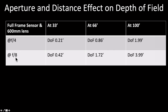Looking at aperture — f4 and f8 on a full-frame sensor camera at 33 feet — f8 gives us twice as much depth of field as f4. You can also see that the further away the bird is, the more depth of field we have. So if a bird is 66 feet away and you're shooting at f4, you'll have almost a foot of depth of field, and a lot of the bird will be in focus unless it's a really large bird like a great blue heron or bald eagle. For a small bird like a swallow, the whole bird fits in the depth of field zone.